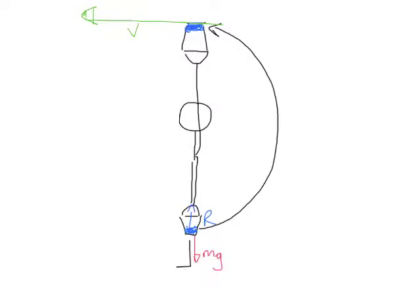Now if that's the velocity it has, if the bucket suddenly disappeared at that point, the water would keep travelling in a straight line.